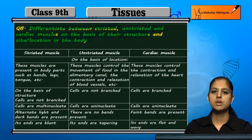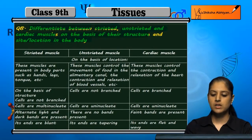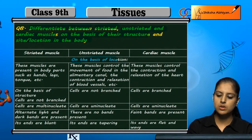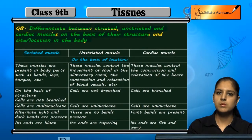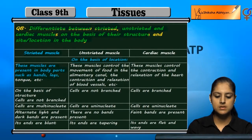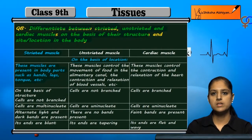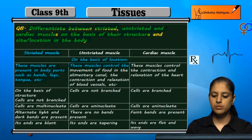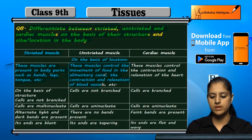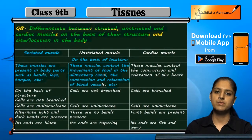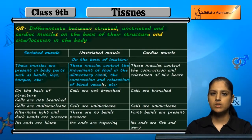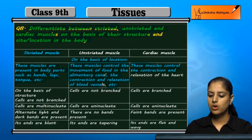On the basis of their location: striated muscles are present in body parts such as hands, legs, tongue etc. The unstriated muscles control the movement of food in the alimentary canal, and the contraction and relaxation of blood vessels. The cardiac muscles control the contraction and relaxation of the heart.